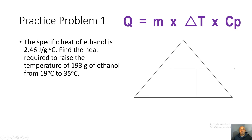Practice problem one: the specific heat of ethanol is 2.46 joules per gram degrees Celsius. Find the heat required to raise the temperature of 193 grams of ethanol from 19 degrees Celsius to 35 degrees Celsius.